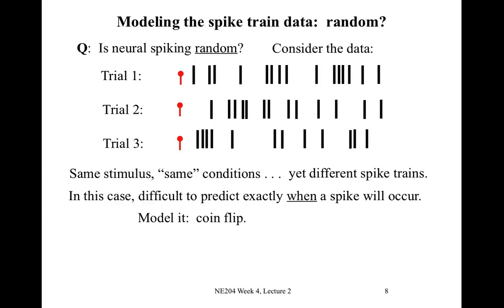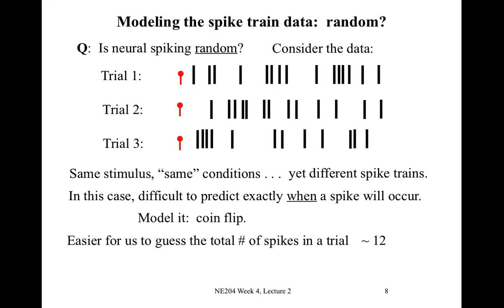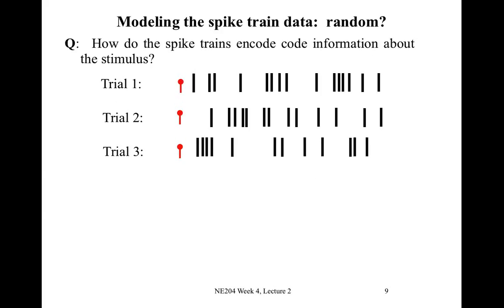We can model this in the coin flip sense: we have some probability of a spike at each moment in time, but we don't know for sure what will happen. One thing we notice is that it's much easier to guess the total number of spikes in a trial. Counting the tick marks in each trial, we find about 12 spikes per trial, though they occur at random times. We can also compute the average firing rate: dividing 12 spikes by half a second gives 24 Hz. Within this 500-millisecond window, the spike count and firing rate are about the same, even though the exact spike times are random.